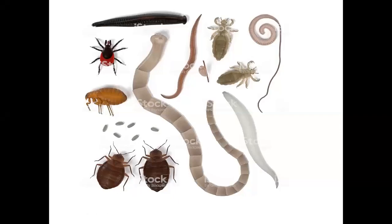These are the types of parasitic organisms. They are blood-sucking — they take liquid nutrients from our body. They don't take solid nutrients, that's why we don't call it holozoic.